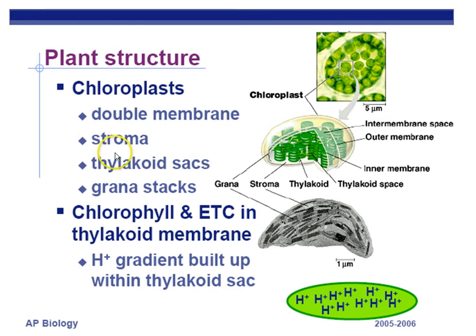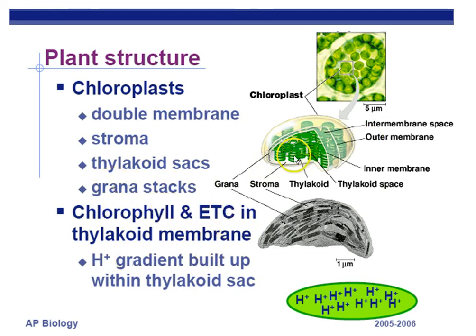Chloroplasts have a double membrane, a stroma — a liquid interior — and thylakoids, which are the little pancakes. The stack of pancakes is called grana. The chlorophyll in the electron transfer chain in the thylakoid membranes makes two things: ATP and NADPH. This builds up a hydrogen ion, or proton, gradient. Remember, hydrogen ions and protons are the same thing.